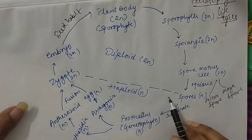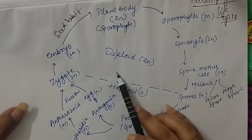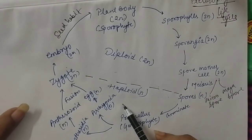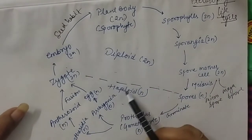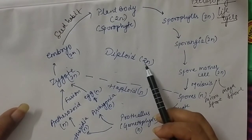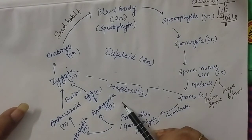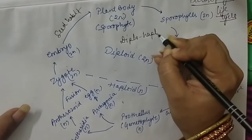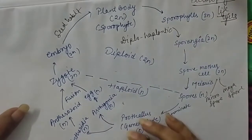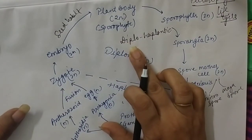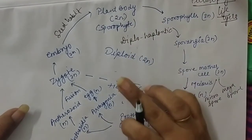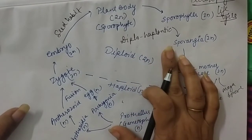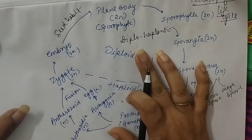The whole life cycle can be divided into two parts: the sporophytic phase, which is diploid and occupies more time, and the gametophytic phase, which is haploid and occupies less time. Since the diploid condition dominates and the haploid condition is brief, this life cycle is called the Diplo-haplontic life cycle. In Bryophyta, by contrast, the haploid condition is dominant.